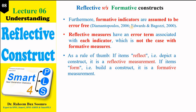Formative indicators are assumed to be error-free — there is no error associated with any formative indicator. Whereas in the reflective model, each indicator may have a measurement error associated with it. As a rule of thumb, if the items reflect or depict a construct, it is called the reflective measurement model, and if the items form or build the construct, it is called the formative measurement model.